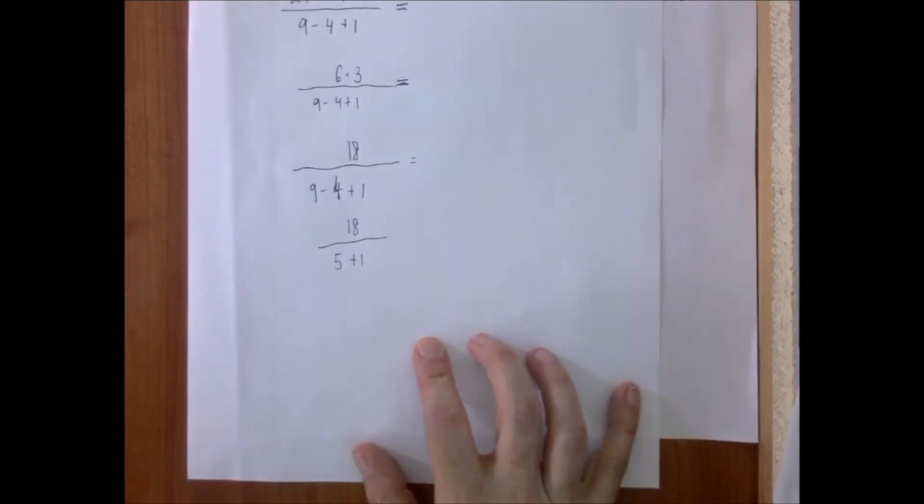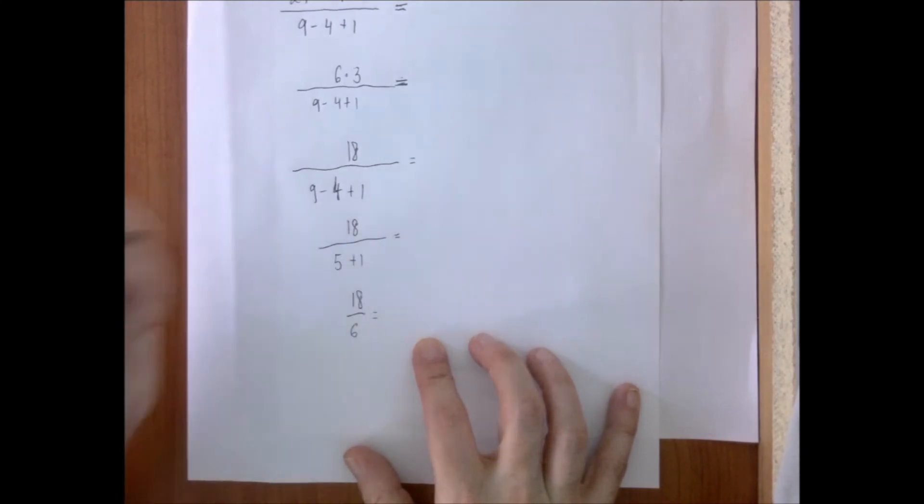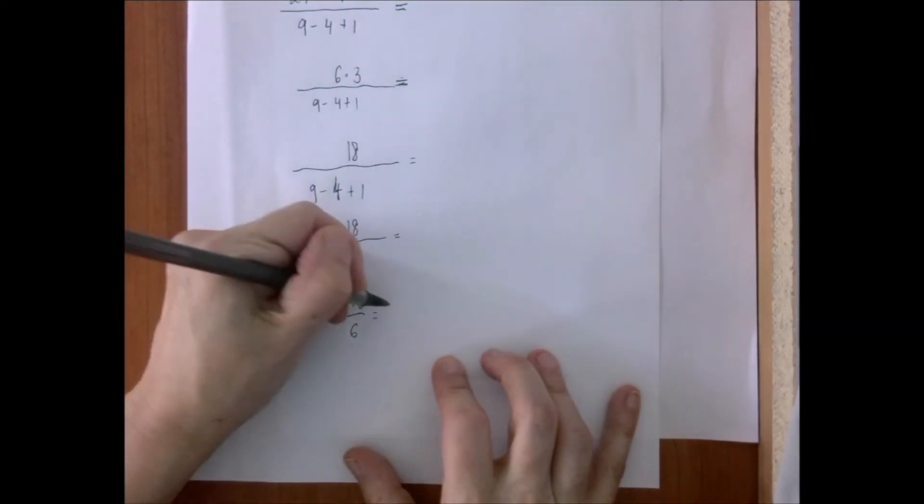9 minus 4 is 5, and 5 plus 1 is 6, and 18 divided by 6 is 3.